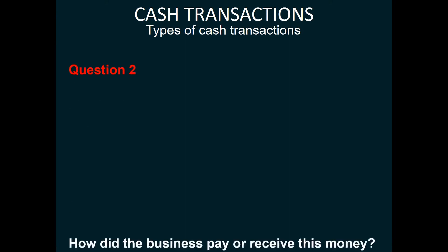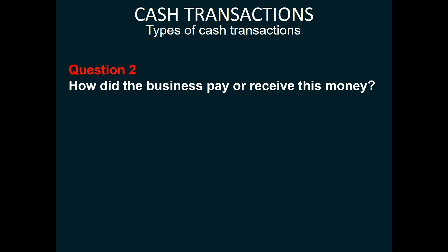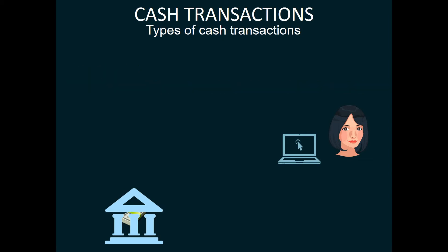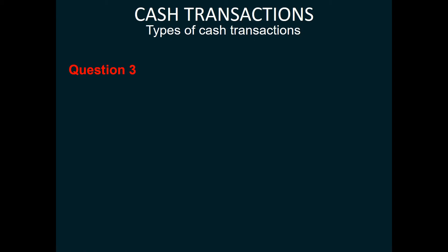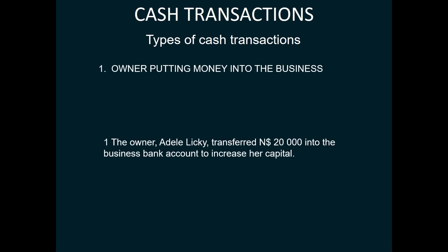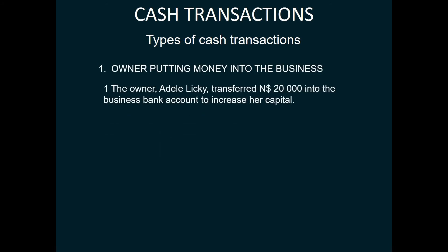Our second question is: how did the business pay or receive money? Well, Adele did a transfer from her bank account via EFT into the business's bank account, so it means the business received money through the bank. And then our final question is: why did the business pay or receive this money? Well, the answer is the business received money in the form of capital. Now that we've answered all three questions, let's have a look at the example again. The owner, Adele Leakey, transferred 20,000 into the business's bank account to increase her capital.